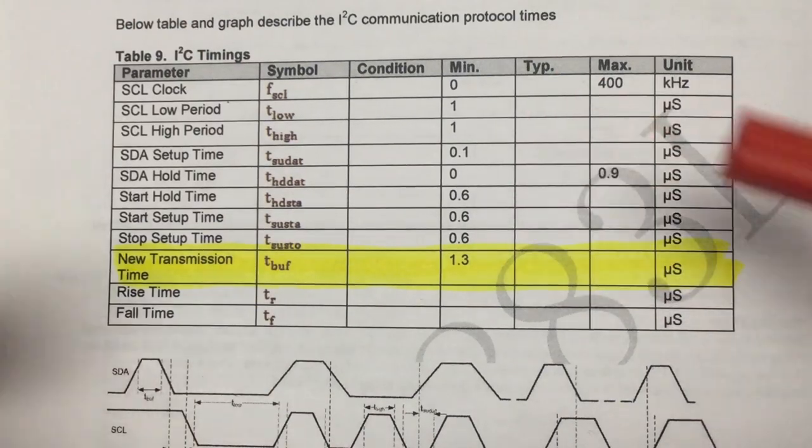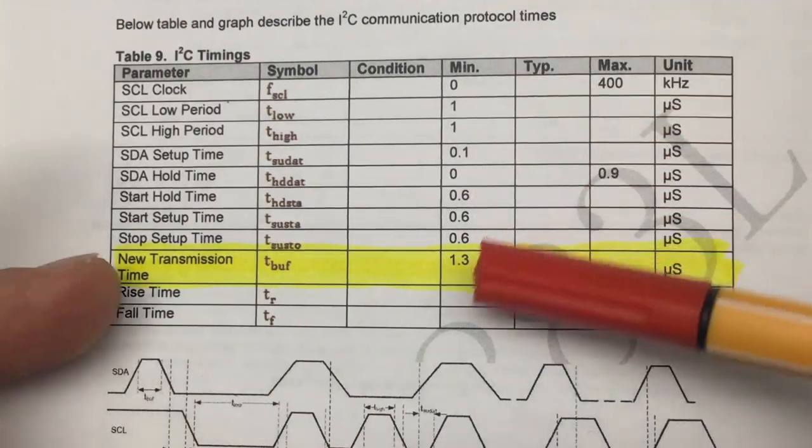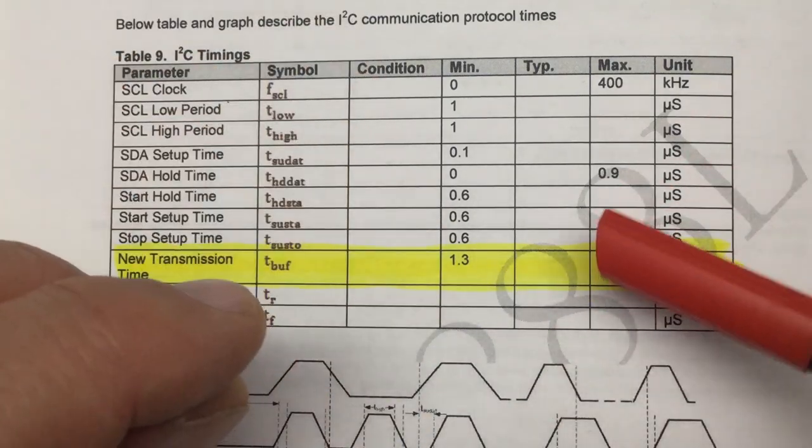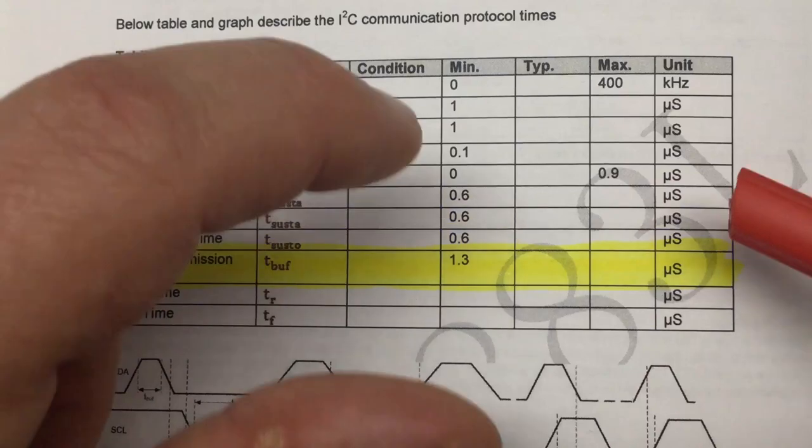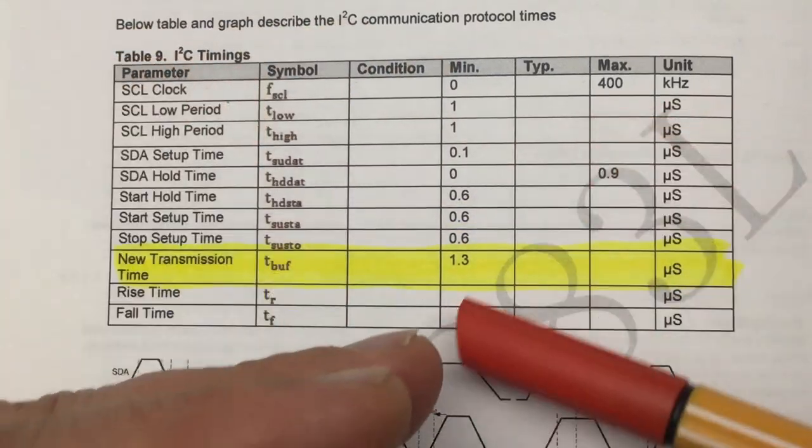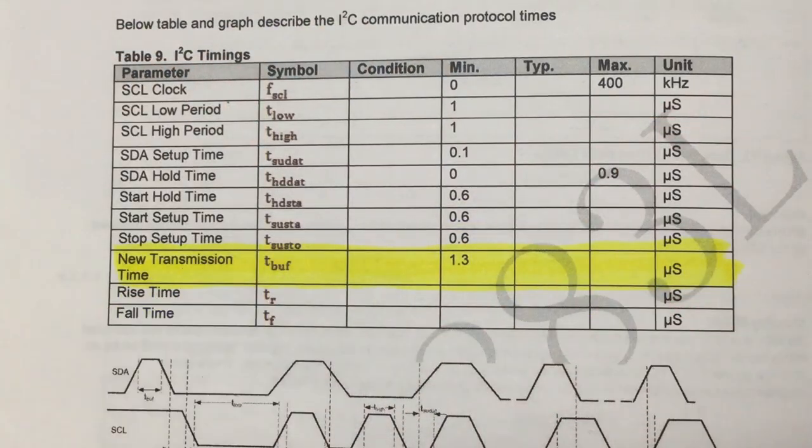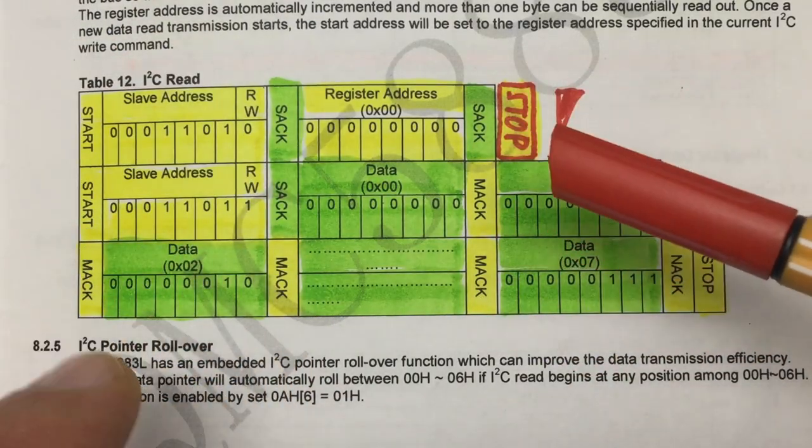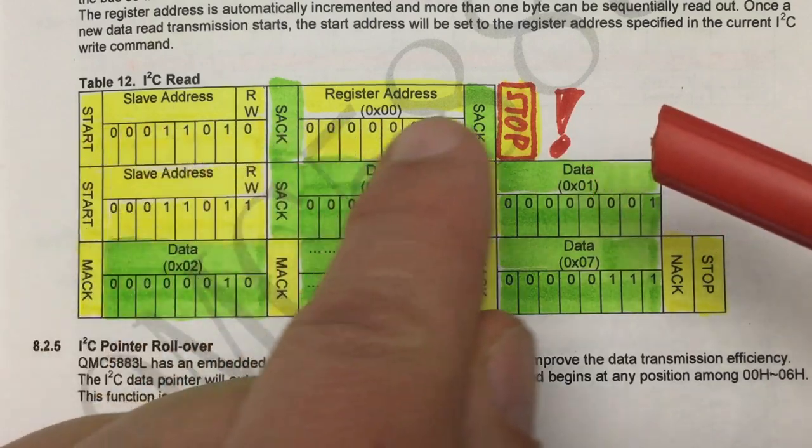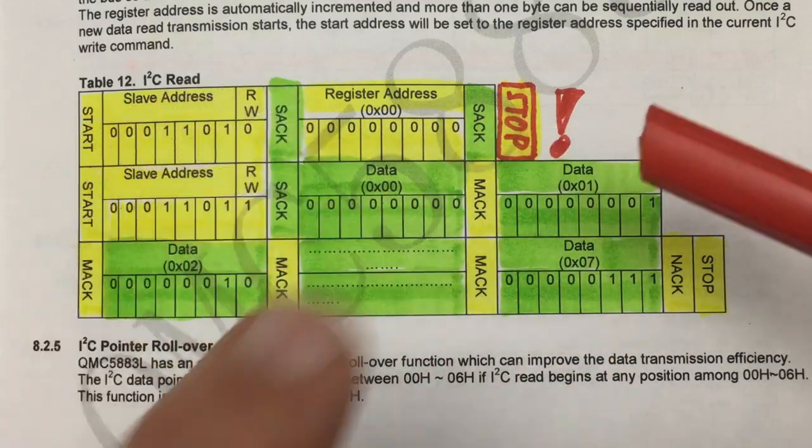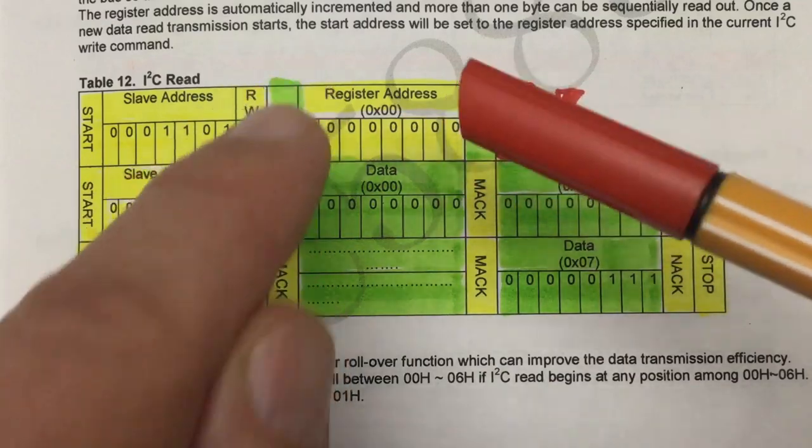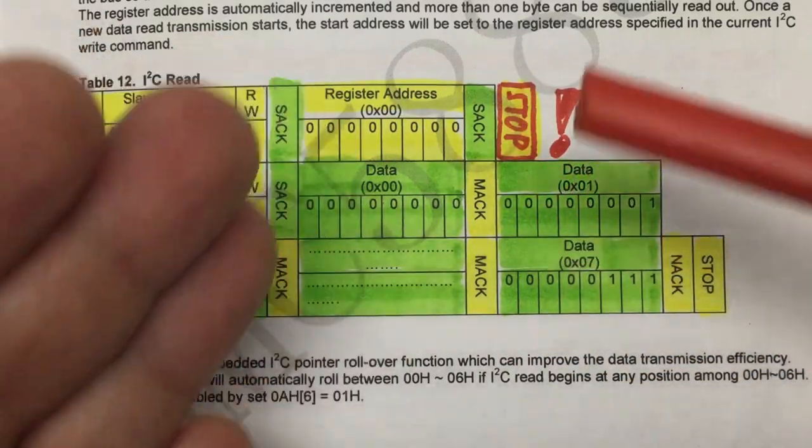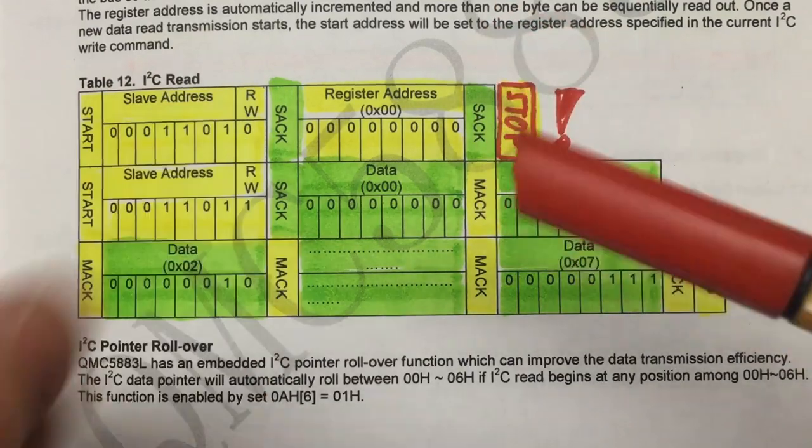I went into my read registers method and put a delay of two microseconds between my transmission step and my request step, because the datasheet states there has to be a minimum time of 1.3 microseconds between each transmission. Maybe my Arduino Nano Every is too fast. In the end, it turned out it was a missing stop signal from the master in the first part of the I2C read sequence, where I transmit the register address to the slave which I want to read from. Little bug here in the datasheet.